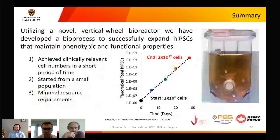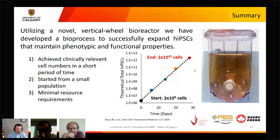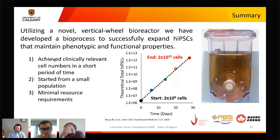Here's a short video showing the vertical wheel bioreactor in motion — you can see the little dots moving around, which are induced pluripotent stem cell aggregates. Starting with 2 million cells, this protocol can yield 2 × 10^12 cells by the end of the fourth passage using this novel bioreactor with reproducible, consistent performance.